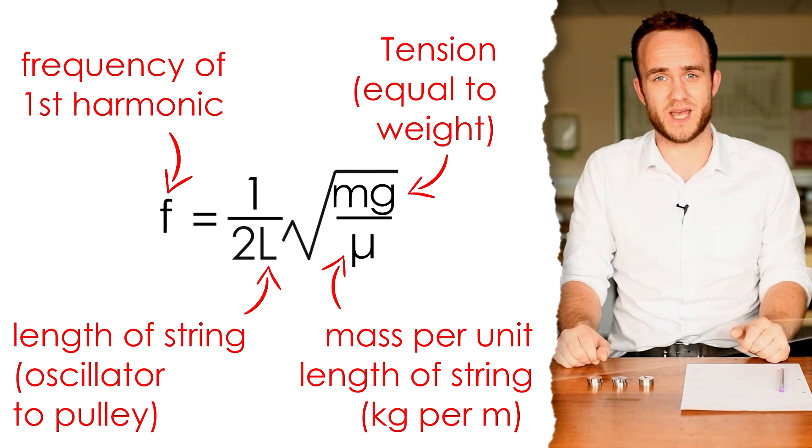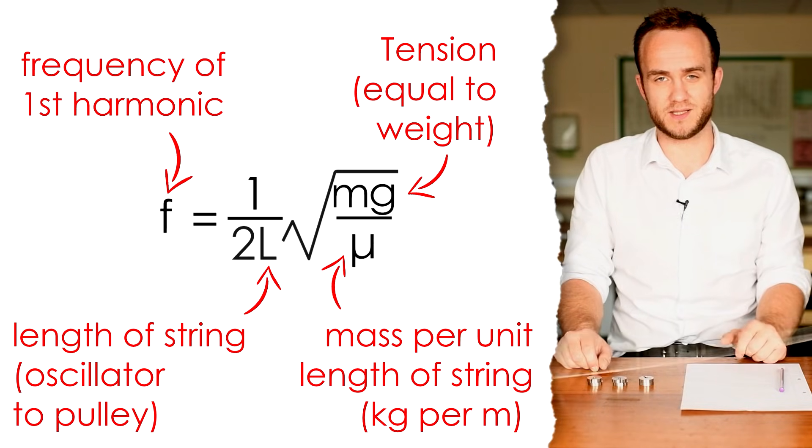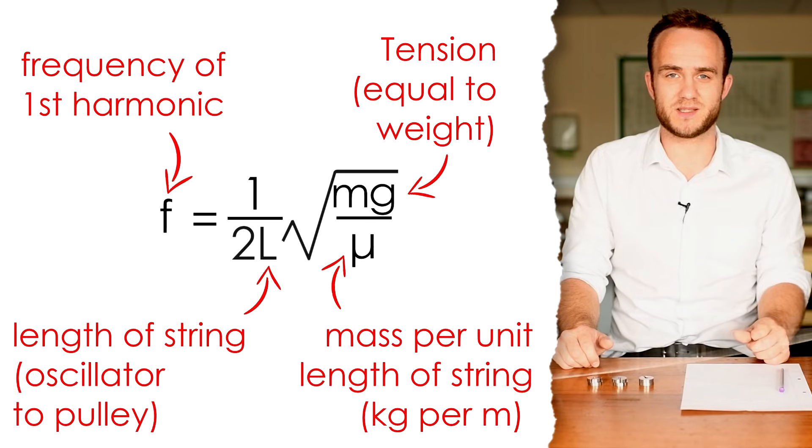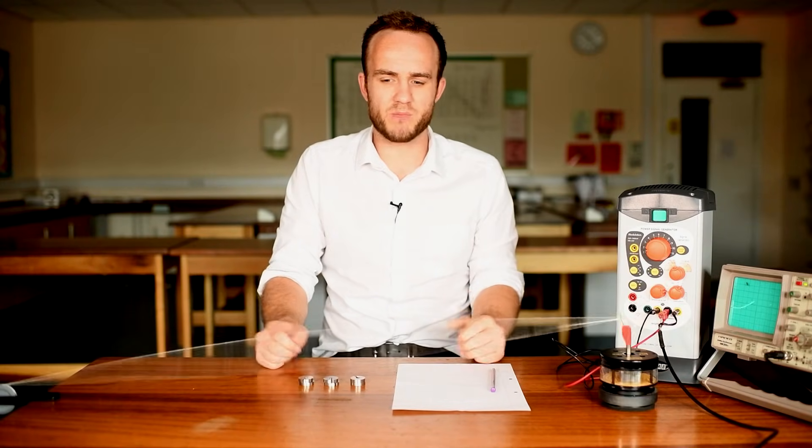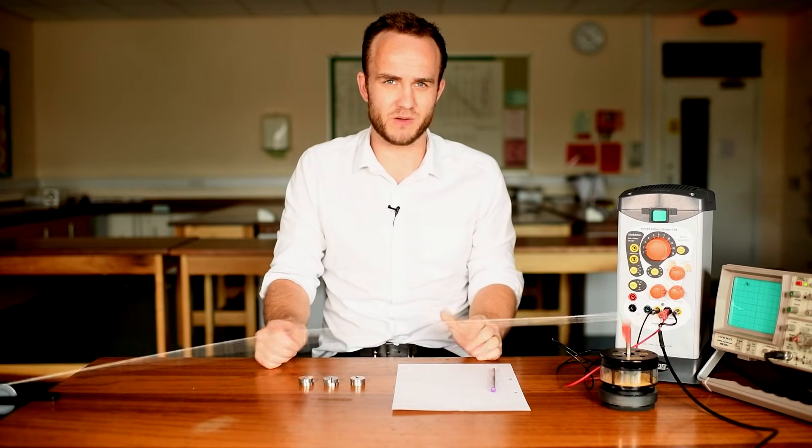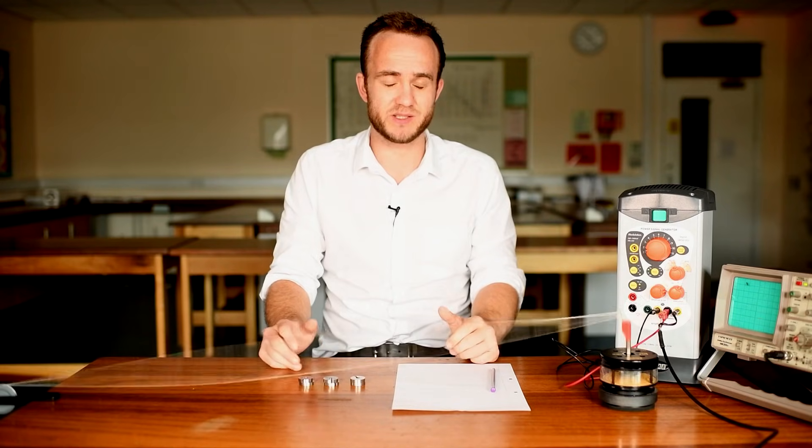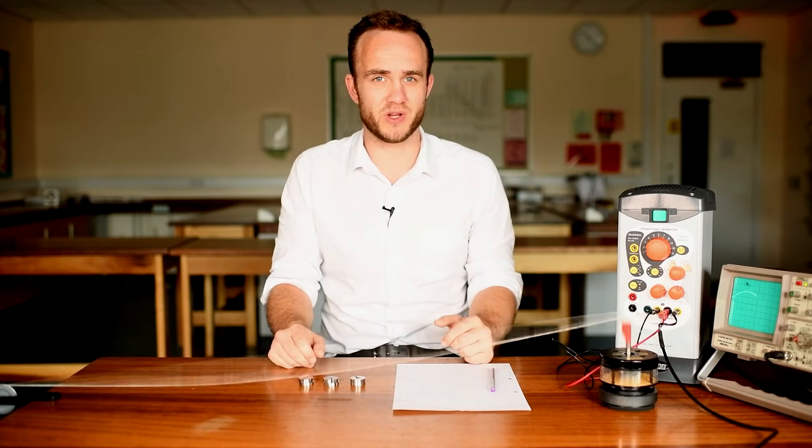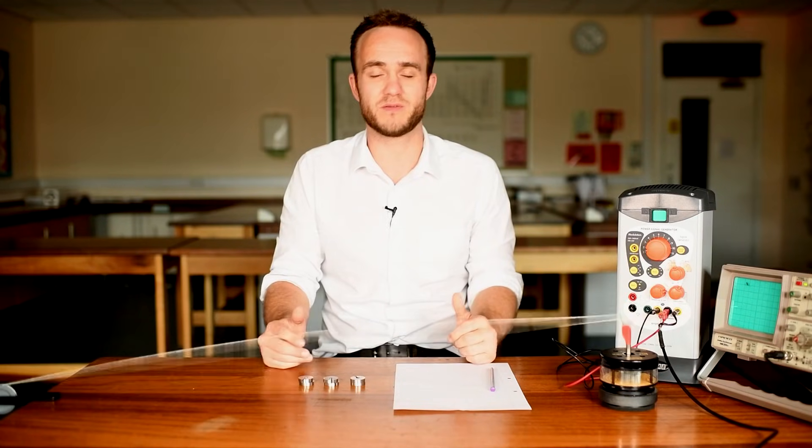Now, what we're going to do is change the mass on the end of the piece of string, and therefore changing the tension. And we're going to see what frequency is needed to create a standing wave then. Now, one of the problems is that the fundamental, or the first harmonic, is a little bit tricky to spot. It's not exactly clear when you have the first harmonic. So, a nifty little trick is to actually go for the second harmonic, and then the frequency of that is going to be double the frequency for the fundamental, first harmonic. All we have to do is half our answer at the end.